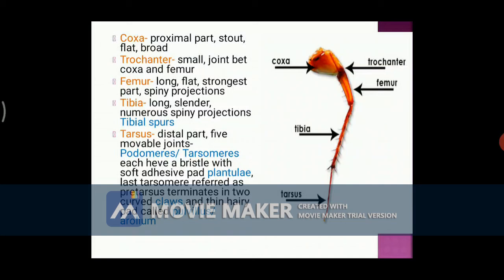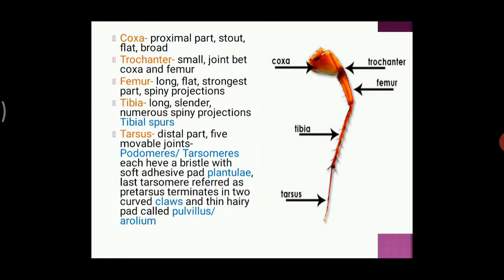The coxa is the part which is attached to the body of a cockroach. The coxa is the most bulged and heaviest part of the leg. The next part, the trochanter, is a small joint in between the coxa and femur. The femur is the long and flat part of the cockroach leg. It is the strongest part, which possesses spiny projections. The tibia is the longest part of the cockroach leg.